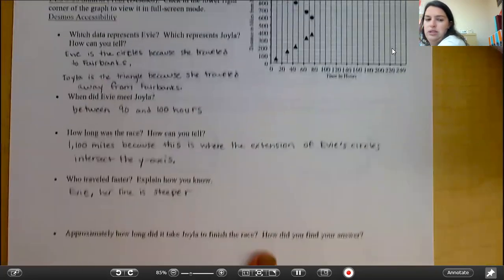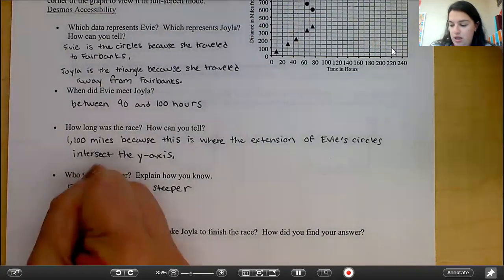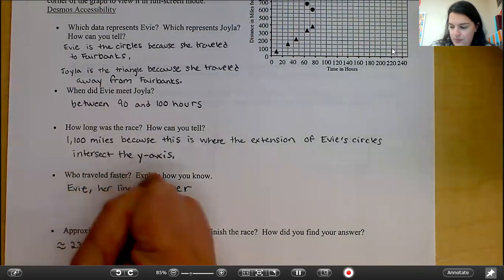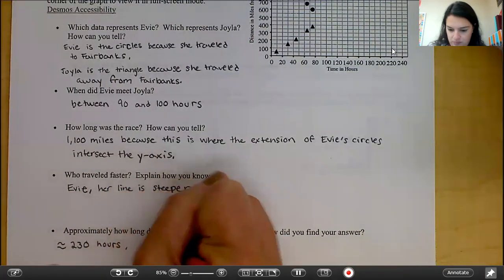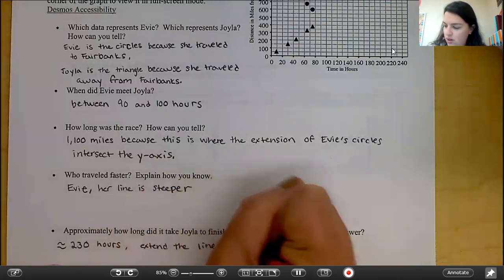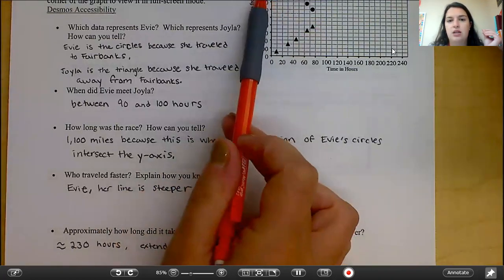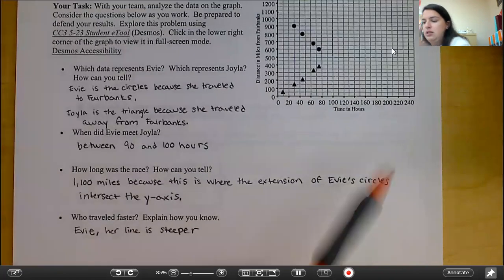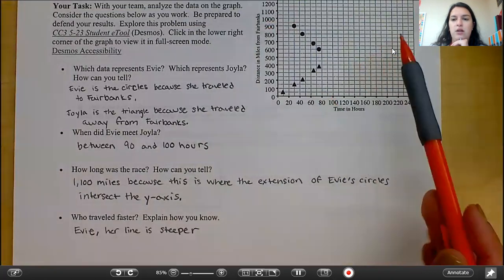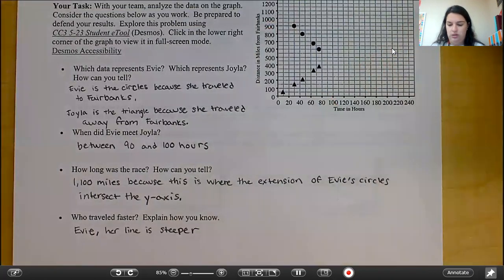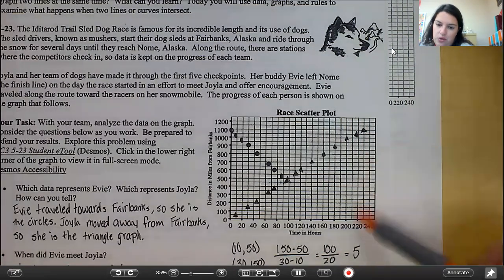And the last bullet point is approximately how long did it take Joyla to finish the race? How did you find your answer? Approximately 230 hours. And to find your answer, you needed to extend the line of triangles to 1,100 miles. So we knew that the race was 1,100 miles because that is where Evie started in Fairbanks. So we need to extend the triangles, which is Joyla's, all the way up to 1,100 miles. So when you did that, it would be approximately at 230 hours.